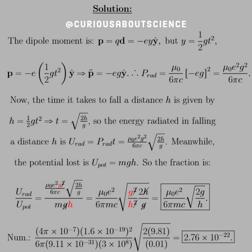Then we take another derivative, and we're left with P double dot is equal to negative eg y hat. So if we want the power radiated, we need to square this, the P double dot, which gives us μ₀e²g² over 6πc.